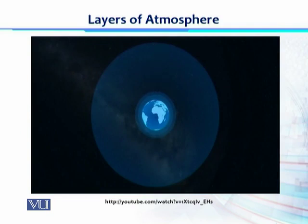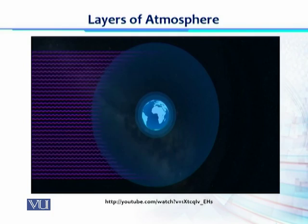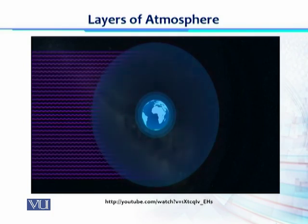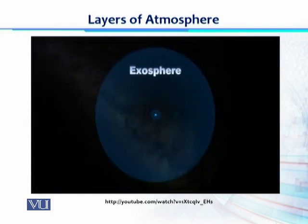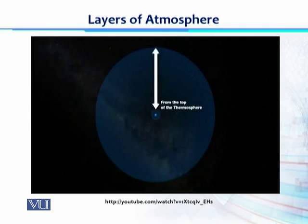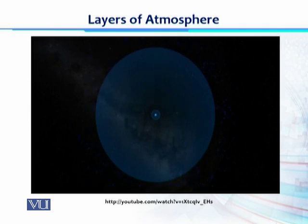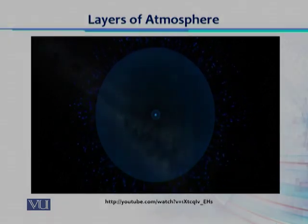The thermosphere extends from 53 miles up to 375 miles above the Earth. Being one of the outermost layers, the air here gets bombarded with ultraviolet and X-ray radiation from the Sun, causing temperatures as high as 3,600 degrees Fahrenheit at the top. The last layer, the exosphere, extends from the top of the thermosphere to 6,200 miles above the Earth, where atoms and molecules escape into space.